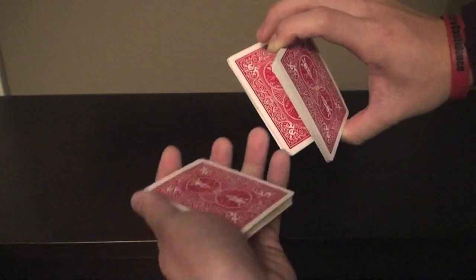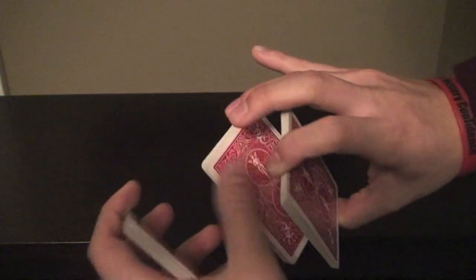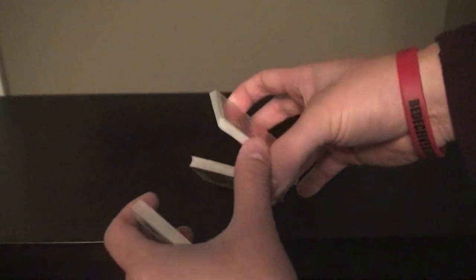So now you have another packet in the mechanic's grip, the middle packet, and then these two packets are held by the ring finger and this index finger and your thumb is still holding these two packets.